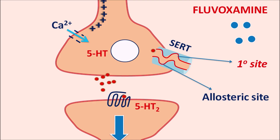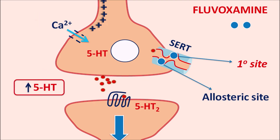Fluvoxamine is an antidepressant that blocks the reuptake of serotonin — that is why it is called an SSRI. Fluvoxamine blocks both the primary site and the allosteric site of SERT. When both sites are blocked, 5-HT cannot be reuptaken into the nerve terminal, so 5-HT levels increase within the synaptic cleft, increasing serotonergic transmission and improving depressive symptoms.